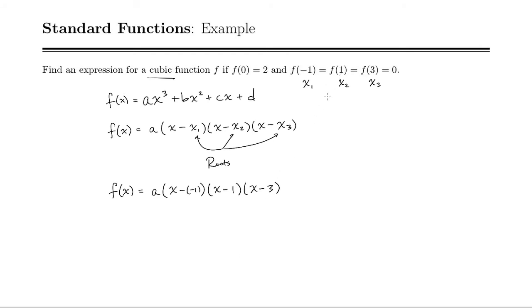Notice if I plugged in 1, I'd have a 1 minus 1 right here which is 0, and 0 times anything is 0. So I get my 0. Same thing with the 3 and same thing with the negative 1.